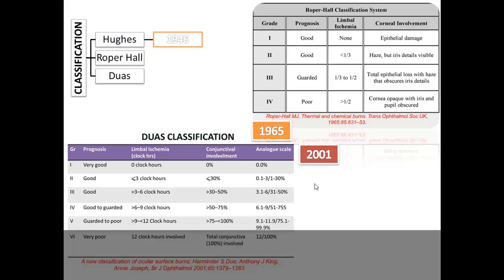According to Dua, grade 3 involves 3 to 6 clock hours of limbal involvement but carries a good prognosis — unlike Roper Hall's, where 3 to 6 clock hours is considered a guarded prognosis. Dua also included an analog scale, which is a ratio between the amount of limbal involvement and conjunctival epithelial involvement — for example, grade 3 could be expressed as 3 clock hours divided by 30% conjunctival involvement, noted as 3/30.